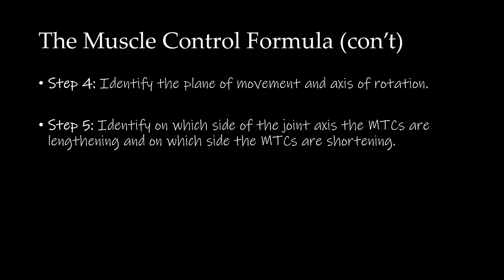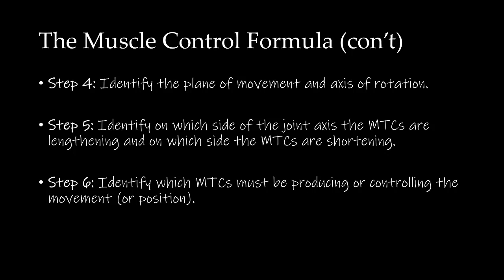Step 6: we put it all together and identify which MTCs must be producing or controlling the movement or position. Since we identified a concentric MTC action, and for concentric actions it is the shortening MTCs that produce the movement, and since the MTCs on the medial side — the glenohumeral adductors — were shortening, we conclude that the glenohumeral adductors were controlling glenohumeral adduction concentrically.